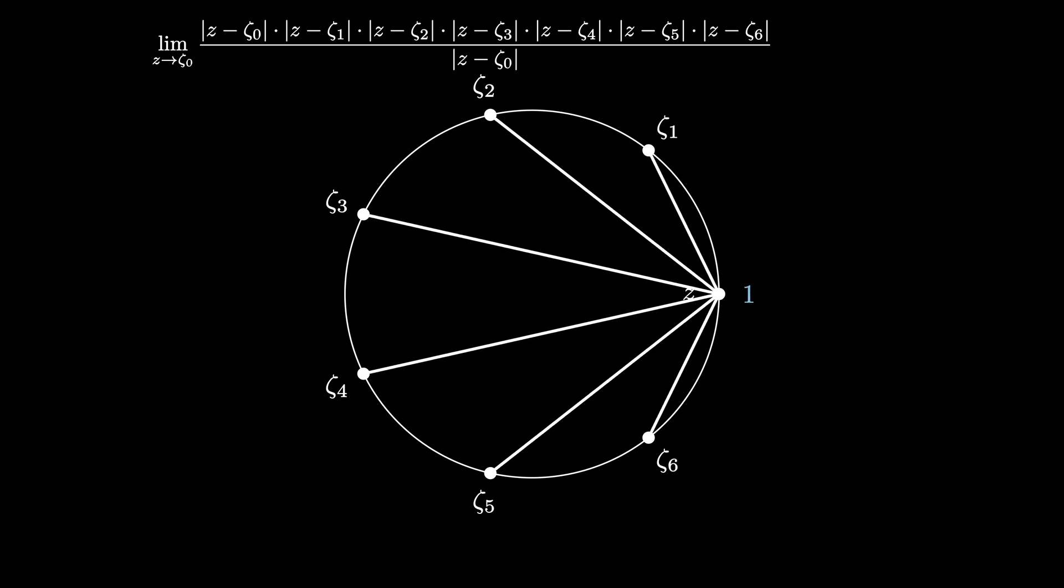But ζ₀ is 1, so this means we're computing the limit as z approaches 1 of |z⁷ - 1|/|z - 1|. Here we're using the fact that z⁷ - 1 factors into the product of the seven linear terms of the form z - ζᵢ. But now we use the fact that z⁷ - 1 is evenly divisible by z - 1, so the limit of interest is now replaced by the limit as z approaches 1 of the sum of the powers of z from z⁰ up to z⁶.